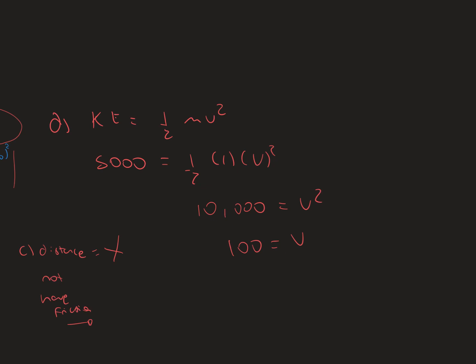Velocity squared is going to give us 10,000, and as we take the square root of it, it's going to give us 100 meters per second.